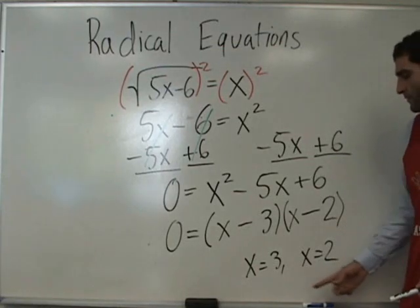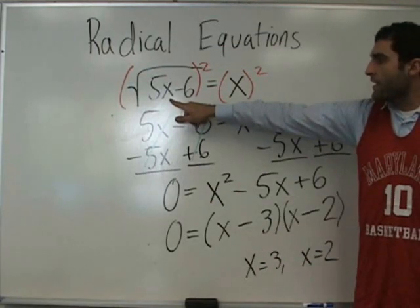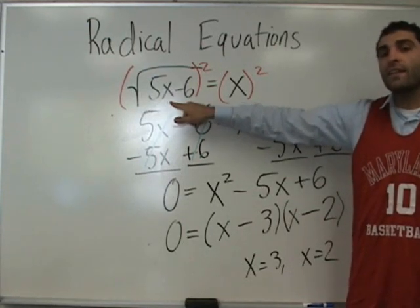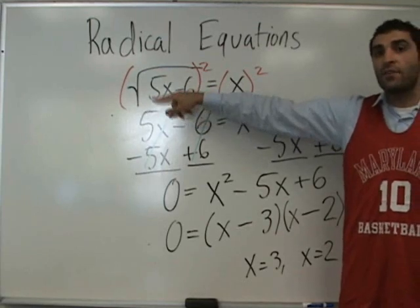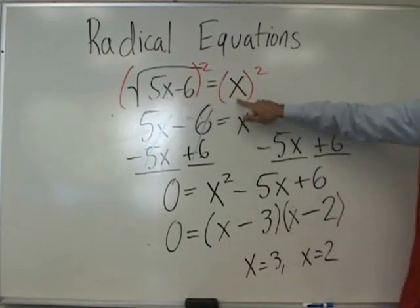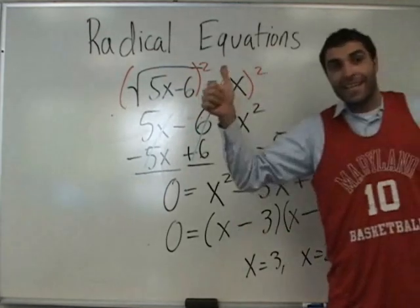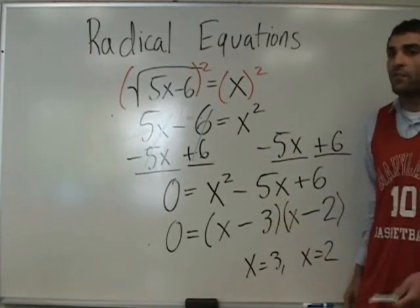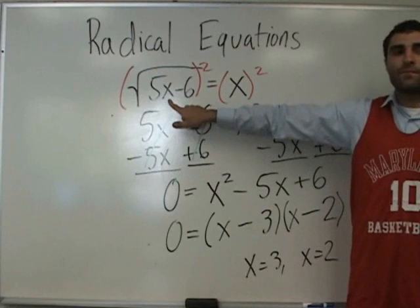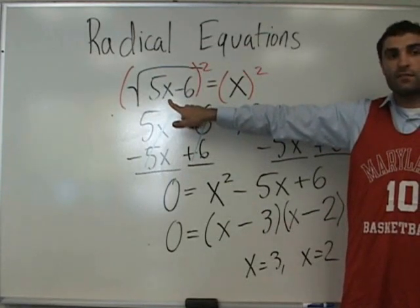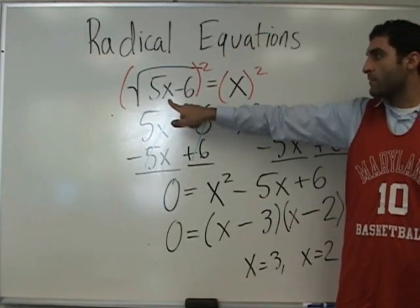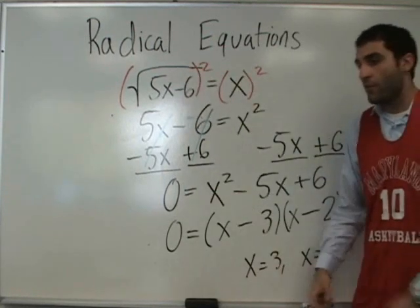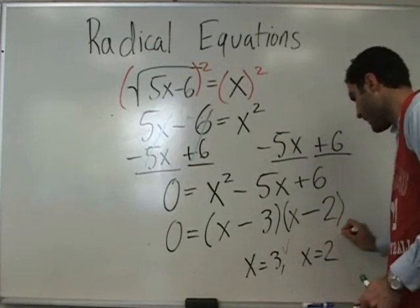Now we have to check both solutions. Plugging in 3: 5 times 3 is 15, minus 6 is 9, square root of 9 is 3 — equals our original 3. Check. Plugging in 2: 5 times 2 is 10, minus 6 is 4, square root of 4 is 2. Both of them work!